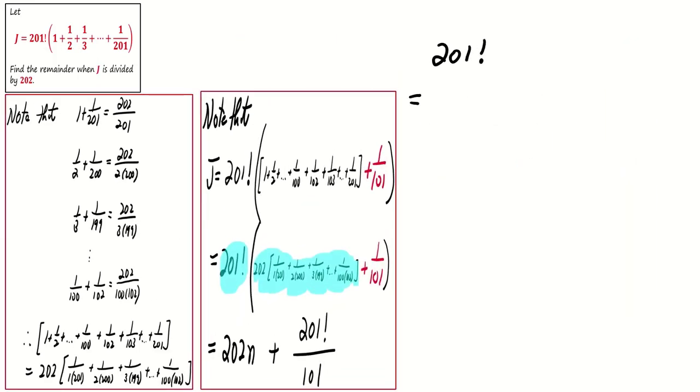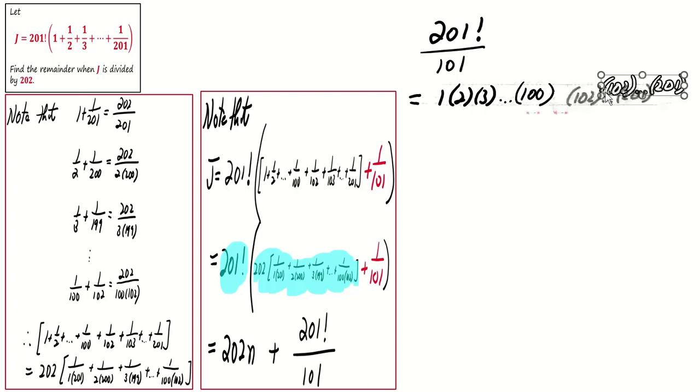Since 201 factorial is the product of integers from 1 to 201, we can break down the integer 201 factorial over 101 as the product of the integers from 1 to 100, multiplied by the product of integers from 102 to 201.